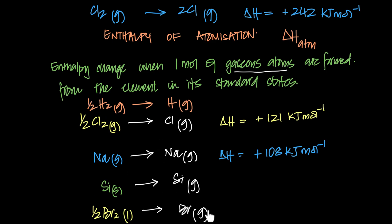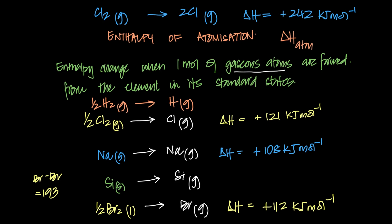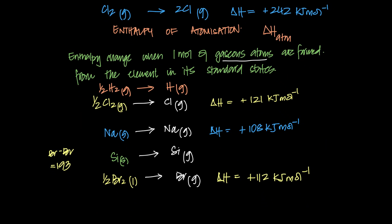For bromine, it's liquid to gas, which will not be the same as half the bond energy of bromine. The Br–Br bond energy is 193 kJ/mol, but bromine's atomization isn't half of that because the bond energy is from a gaseous molecule, while this starts from a liquid. The atomization of bromine is 112 kJ/mol, which is more than just half of 193.